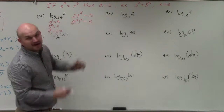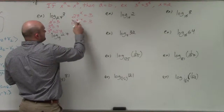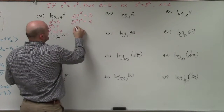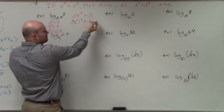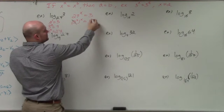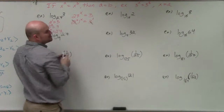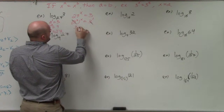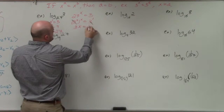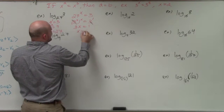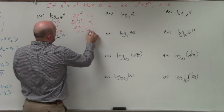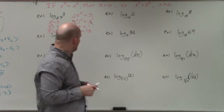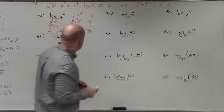Now I have my bases exactly the same. You could say that 3 on the right is raised to the first power. So now I have 3x equals 1, which means x equals one-third. So log base 27 of 3 equals one-third.